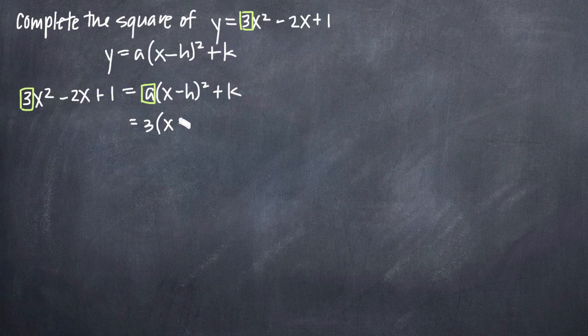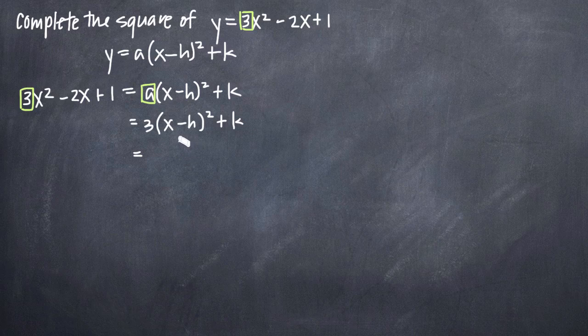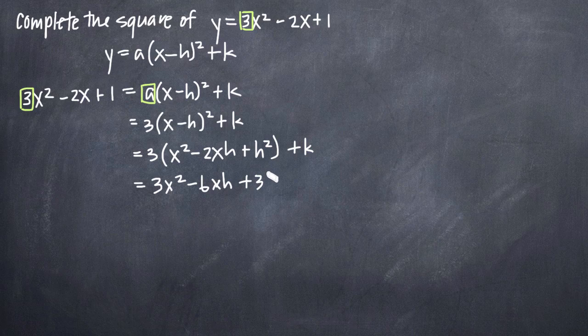So, we get 3 times x minus h squared plus k. Our next step is to expand the quantity x minus h squared. When we do that, we'll get x squared minus 2xh plus h squared plus k. Then we want to distribute the 3 across this quantity here. So, we'll get 3x squared minus 6xh plus 3h squared plus k.